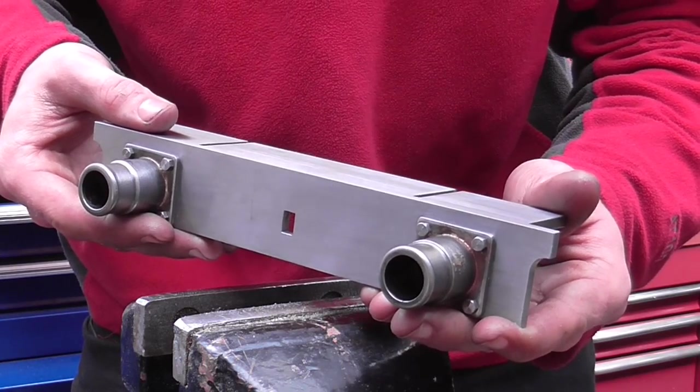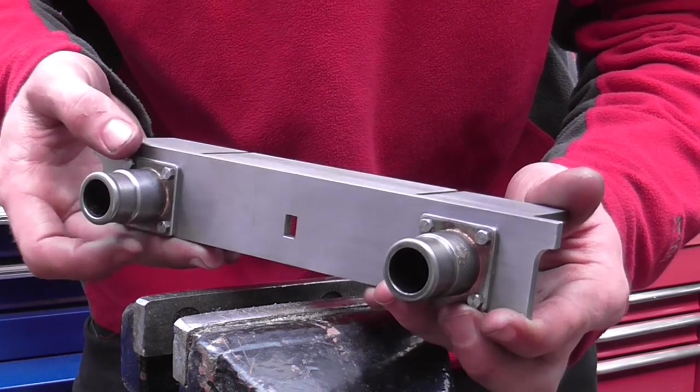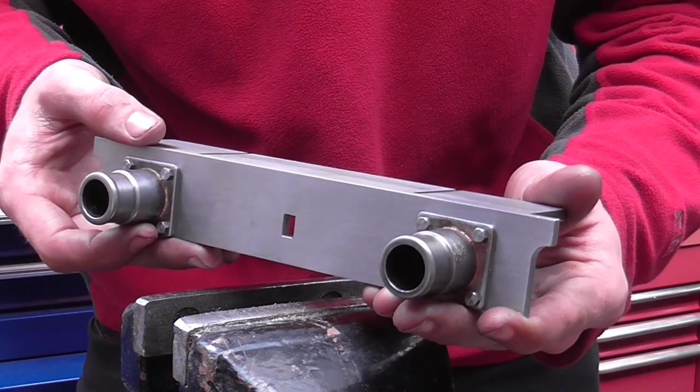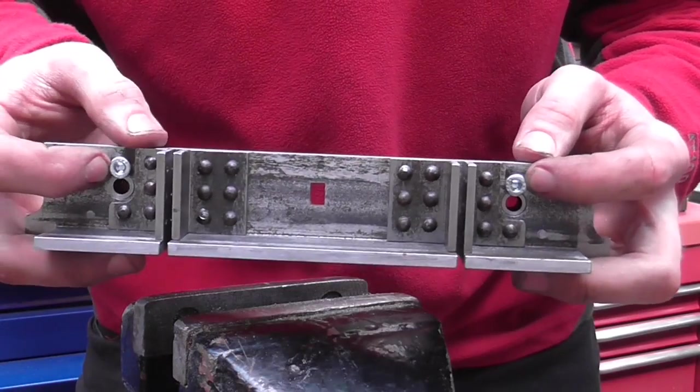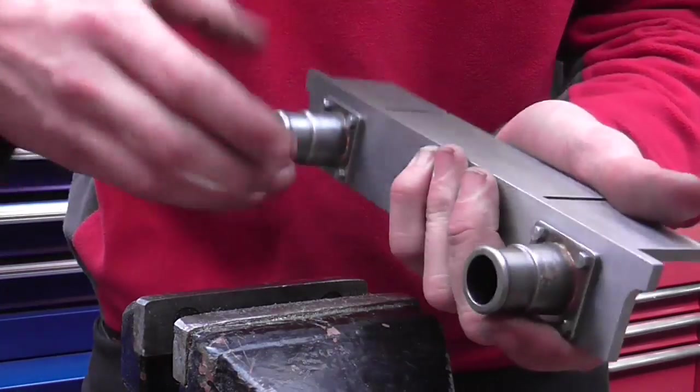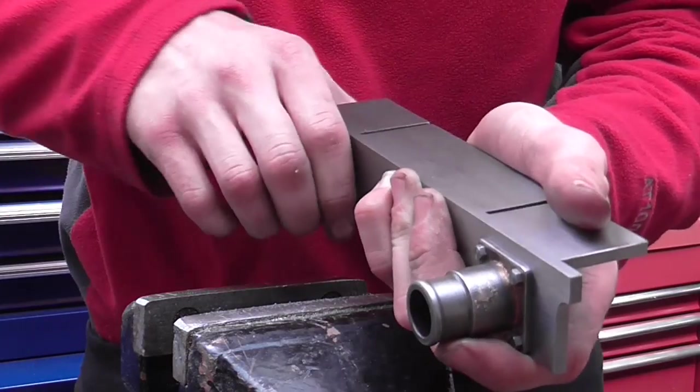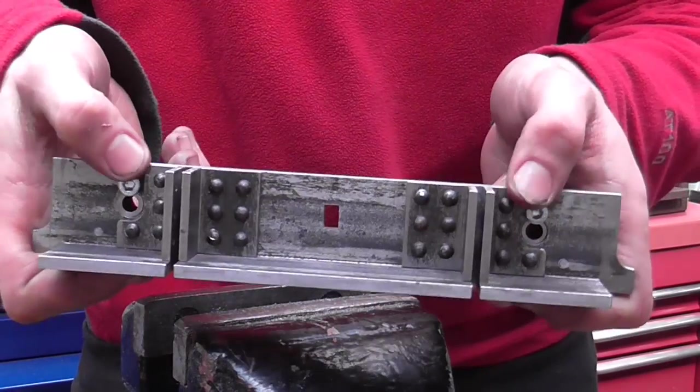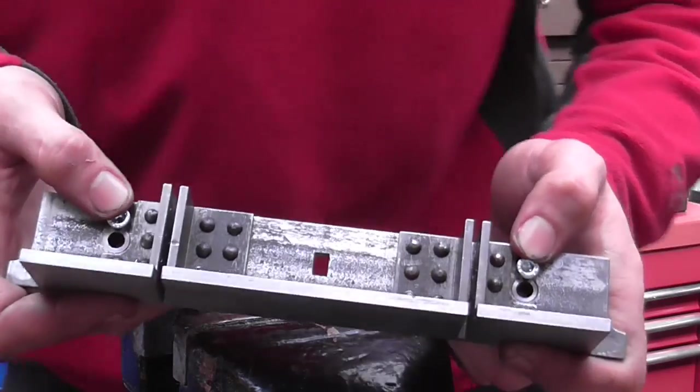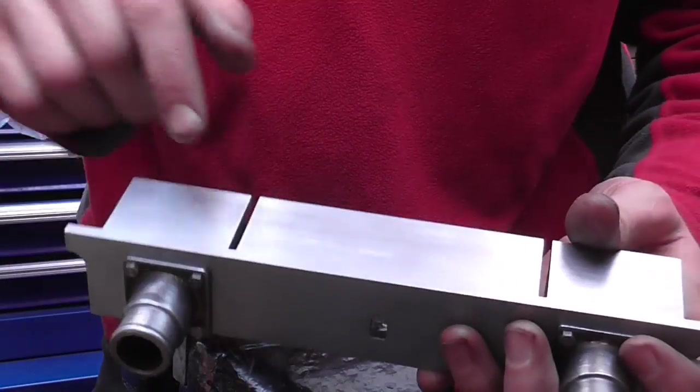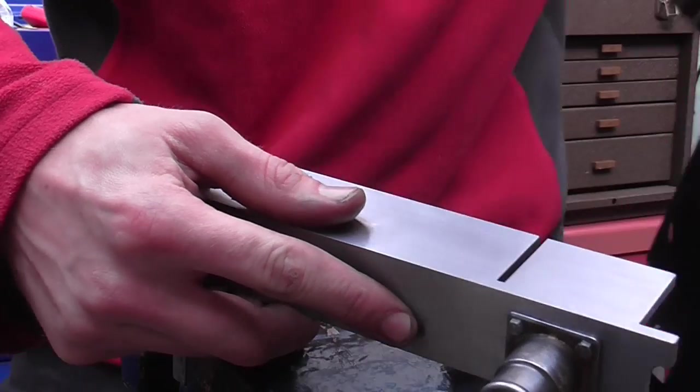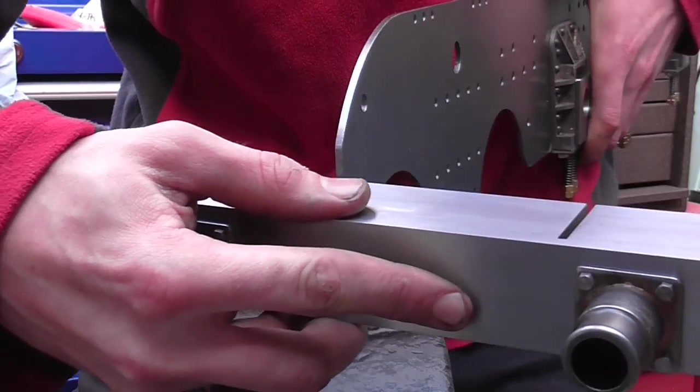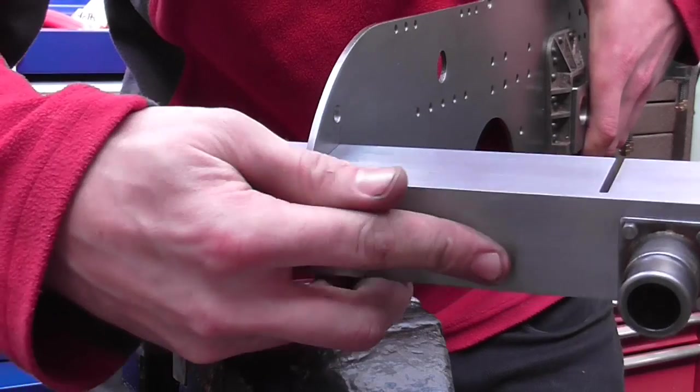So having screwed those front two buffers on, there is the finished front buffer beam. As for the back, as I said I've added two cap screws so that if people try and pick the locomotive up by these buffers, there's something to pull against. If you haven't worked it out, these two slots are for the main frame to slide into, something like that.